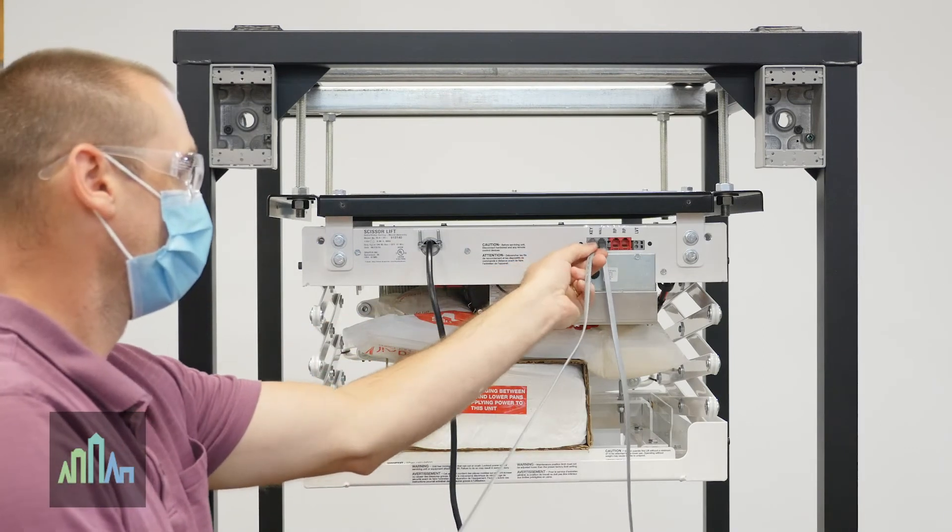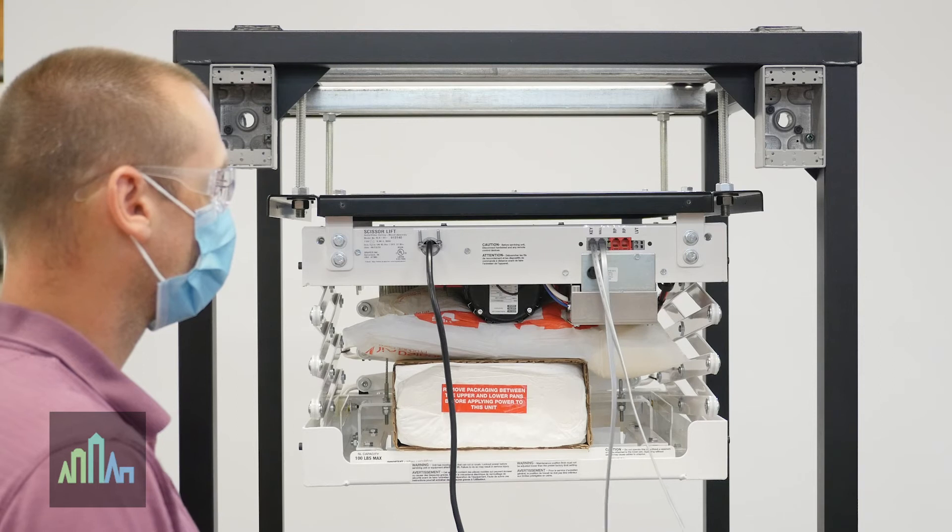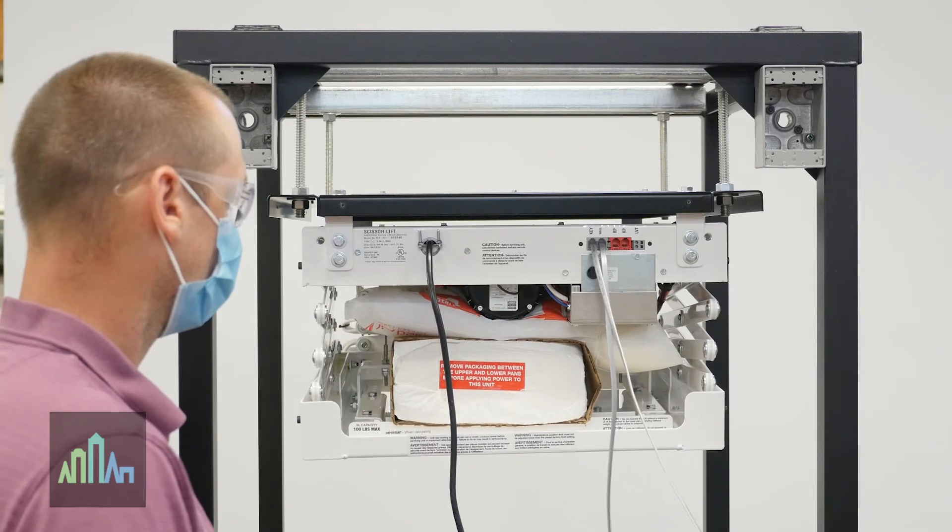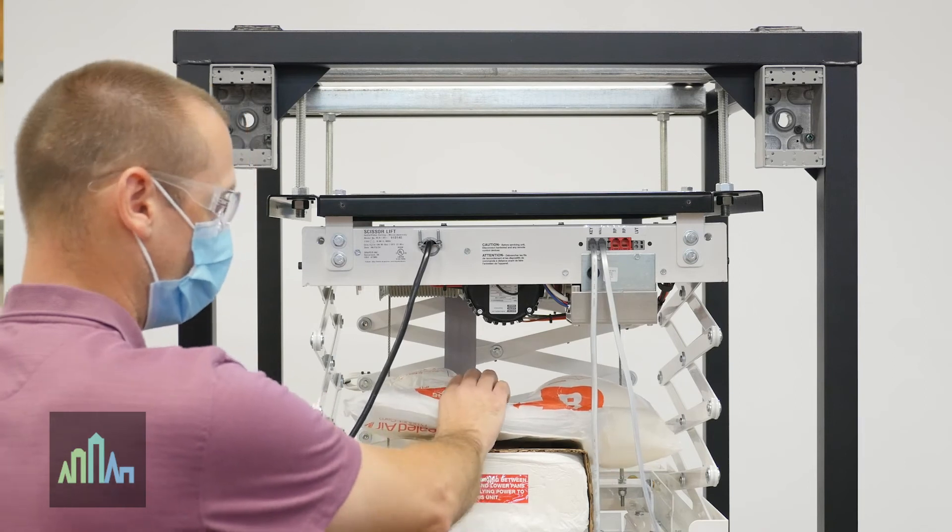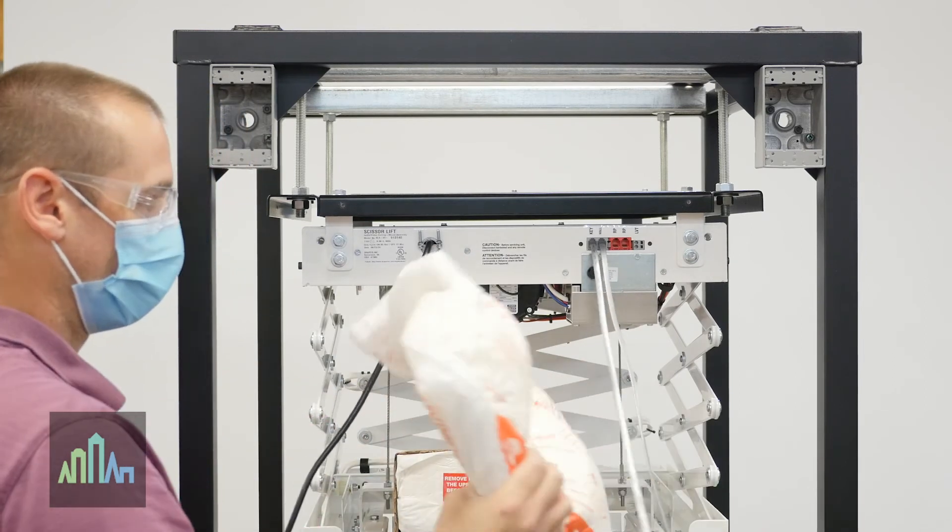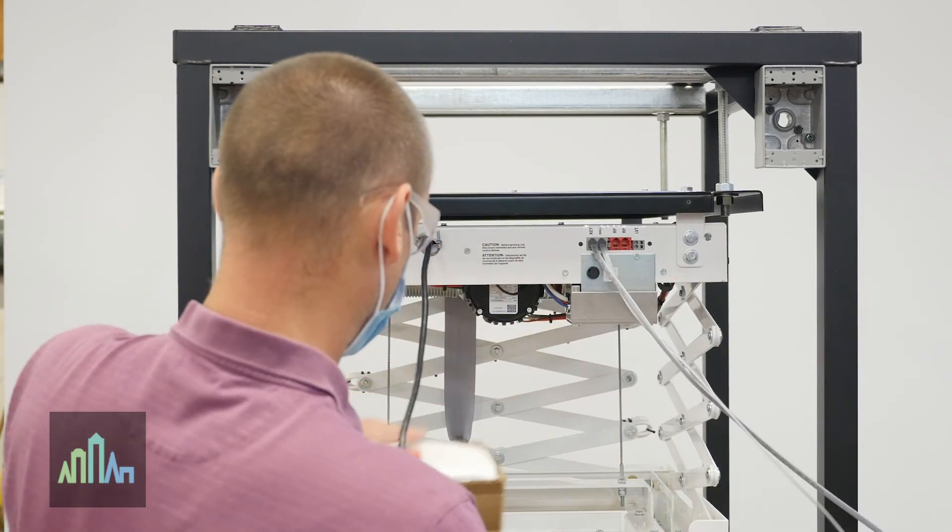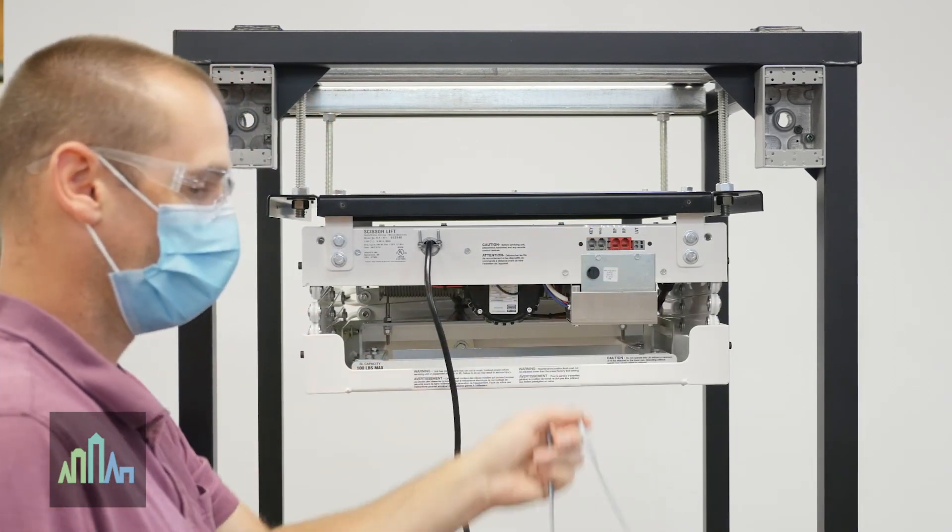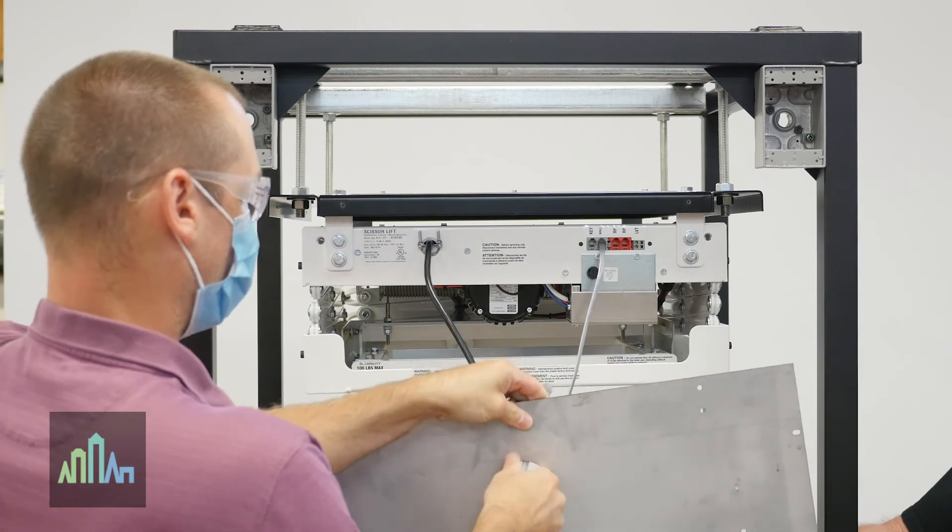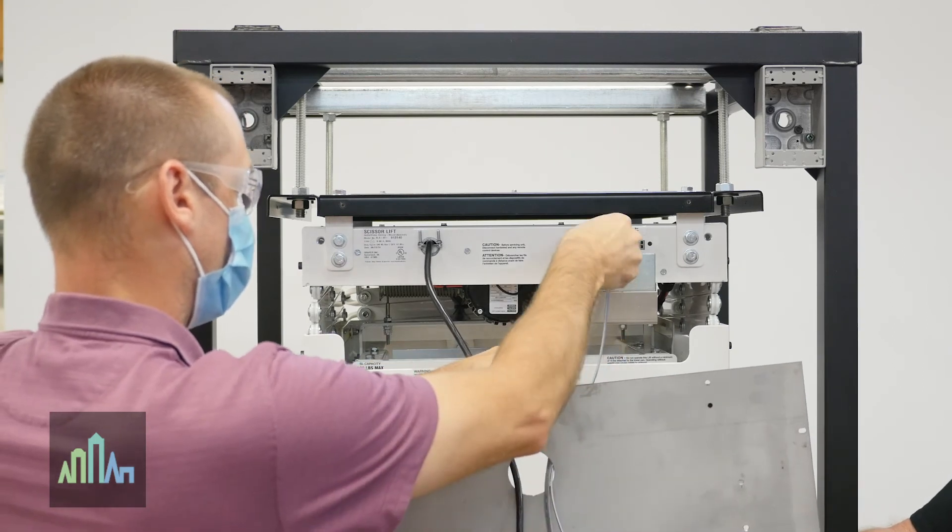Next, temporarily connect the power and control cables to the lift. Raise and lower the lift to remove foam packing. Then, reroute the cables through the circular access port in the environmental airspace housing panel. Once all cables are connected, attach the environmental housing panel to the frame.